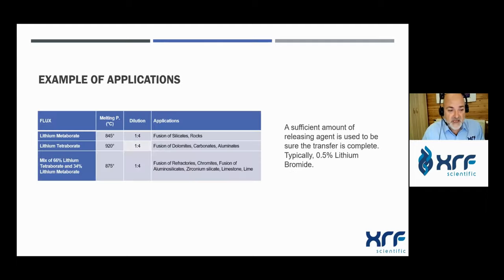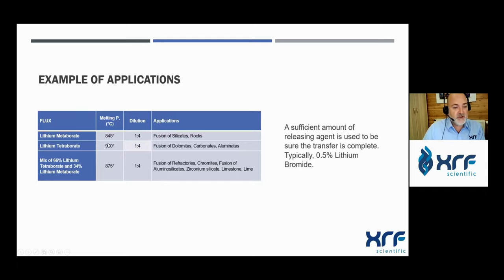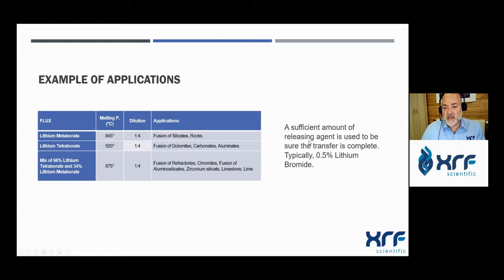The typical fluxes used are lithium metaborate, lithium tetraborate, or a mix of both, with different temperature ranges depending on the melting point of the flux composition. Dilution ratios are quite similar across all flux types. Typical applications include silicate rocks, dolomite, carbonates, and many other mineral products. In this type of fusion, a sufficient amount of lithium bromide must be added to ensure all product pours out of the crucible.